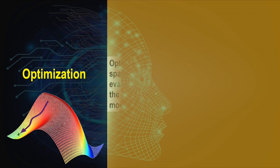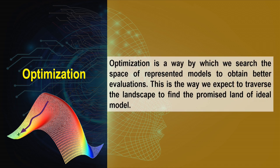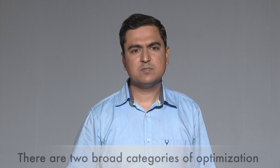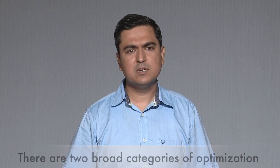The third component is optimization — searching the space of the representation model to obtain the best evaluation. It tells us how to traverse the landscape to find the ideal model for our problem domain. Two broad categories of optimization are stochastic gradient descent and combinatorial or genetic algorithms. Linear programming may also be used in some cases.